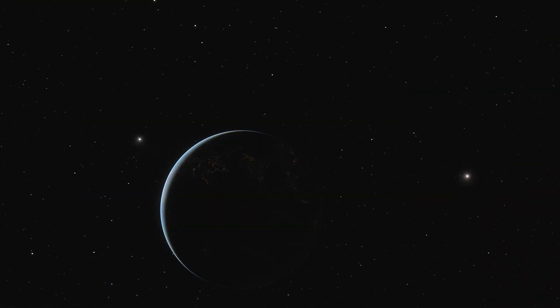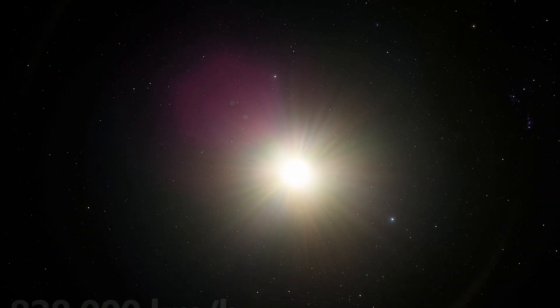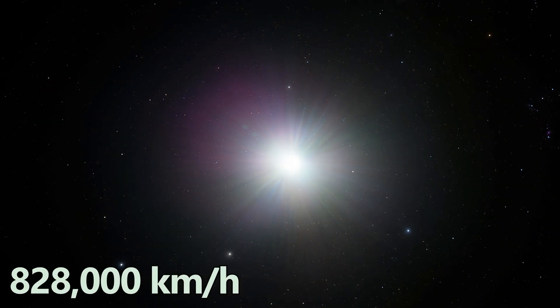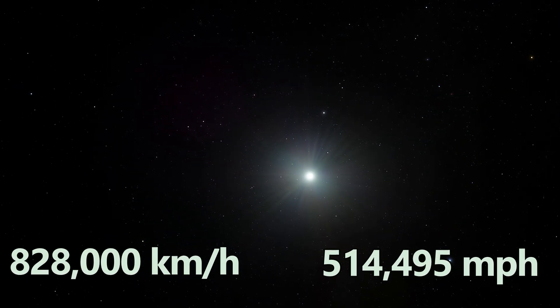To go even further, our Sun and the entire Solar System travel through the Milky Way at roughly 828,000 kilometers per hour or about 514,495 miles per hour.